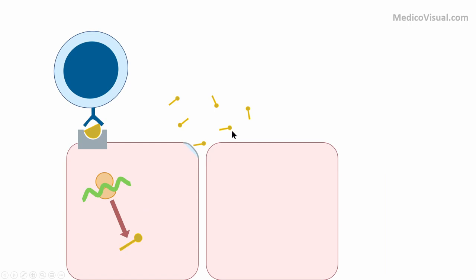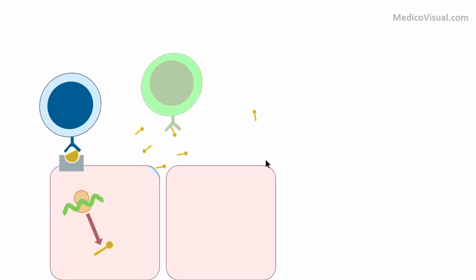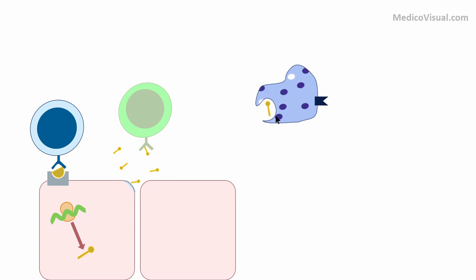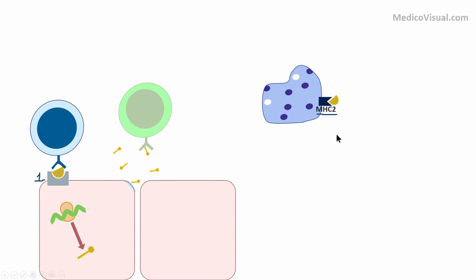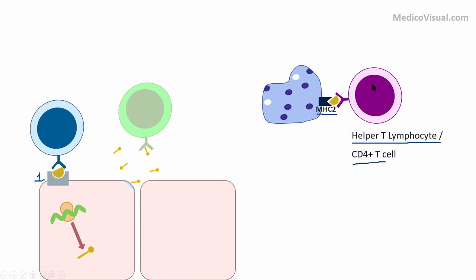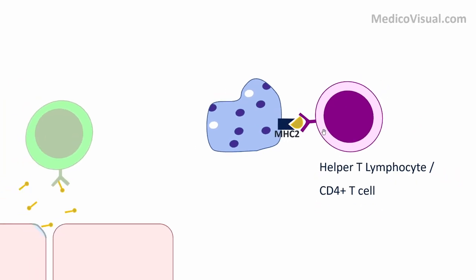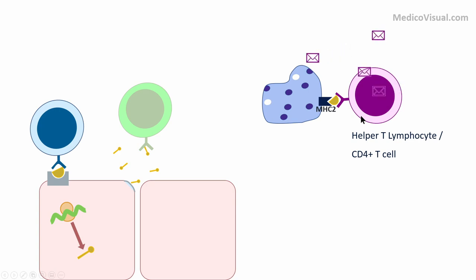Similarly, these spike protein particles will be picked up by the specific B lymphocytes specific for that spike protein, and they will also become activated. Some of these spike proteins will also be engulfed by macrophages and other antigen-presenting cells, which will display them onto MHC 2 receptors. Professional antigen-presenting cells display antigens on MHC 2, while all other nucleated cells display onto MHC type 1. This will then activate the helper T lymphocytes, which will become active upon encountering the MHC 2-bound fragment and will start secreting cytokines.